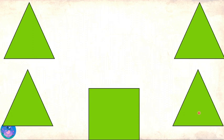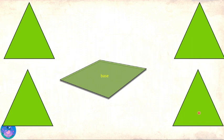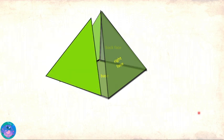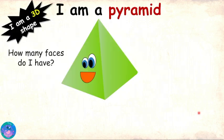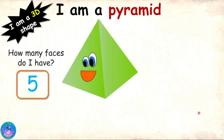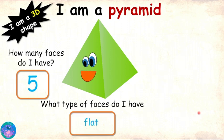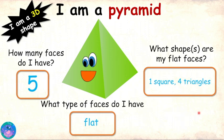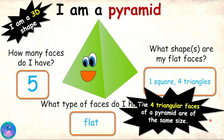You are right. Now I will show you how my faces come together to form my shape. The square face forms the base. And now the triangular faces: we have the back face, left face, right face and front face. So your faces are front, back, left and right — a total of 5 faces. All are flat. One square and 4 triangles. And always remember that my 4 triangular faces are of the same size.